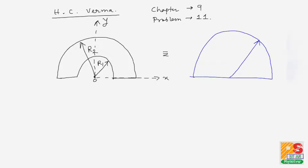We have to find the center of mass of this annular disk using a trick method. I can assume that initially the entire semi-circular disk of radius r2 is present. From this semi-circular disk, another semi-circular disk of radius r1 is removed. If this portion is removed from the original semi-circular disk, the remaining portion looks like the annular disk.